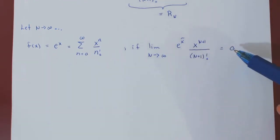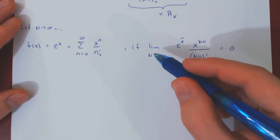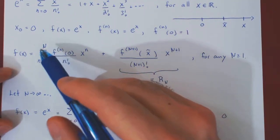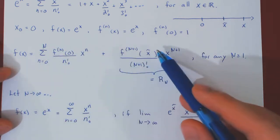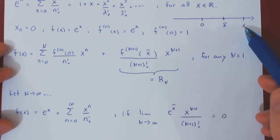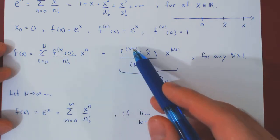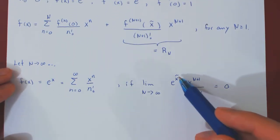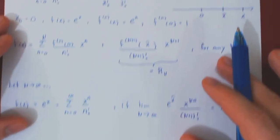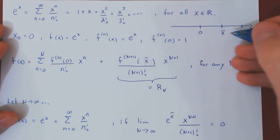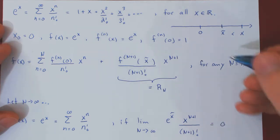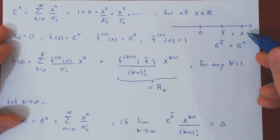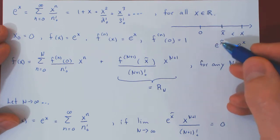How do we show that this limit is equal to 0? We have to be careful about e to the x hat, because x hat does depend on n. Taylor's theorem says for any positive integer n, you can find some x hat between the center and the value of x of interest. So we want to remove this dependence upon uppercase N. Since x hat is less than x, and e to the x is an increasing function, therefore e to the x hat is less than e to the x. And x does not depend on n, so this inequality allows us to remove the dependency upon uppercase N.